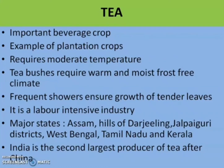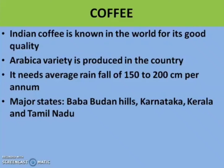The next crop is coffee. It has been a typical production across the entire world, with special significance for coffee seeds produced in Yemen Arab states. It was recently introduced into India. It needs average rainfall of 150 to 200 cm per annum and also requires moderate temperature. Initially its cultivation was introduced on the Baba Budhan hills. Today the major coffee producing states are Karnataka, Kerala and Tamil Nadu.